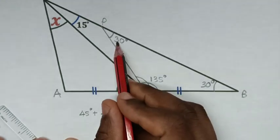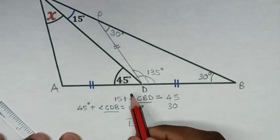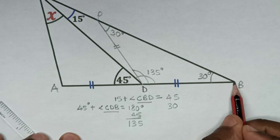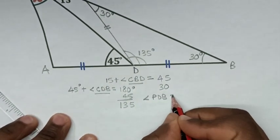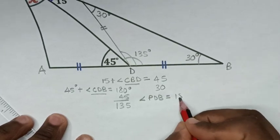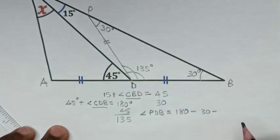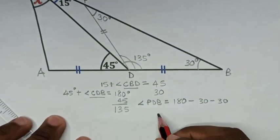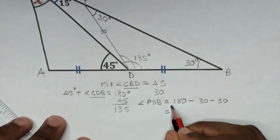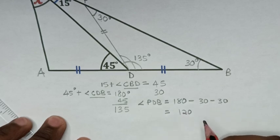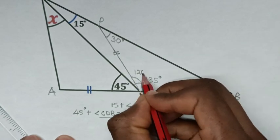Then to find angle PDB: 30 plus 30 plus this angle equals 180 degrees. So angle PDB equals 180 minus 30 minus 30, which equals 120 degrees. Therefore this angle here is 120 degrees.